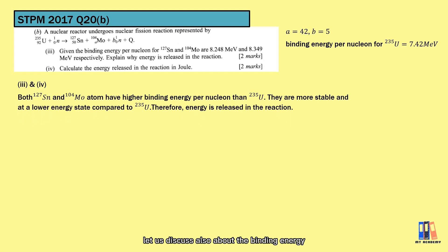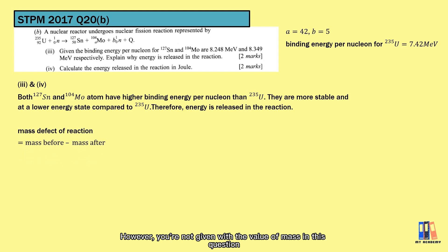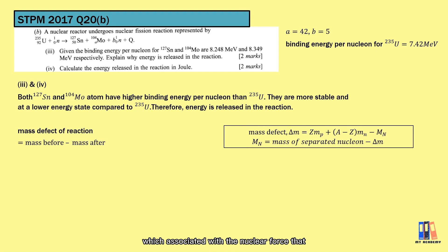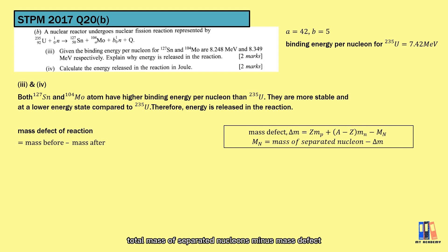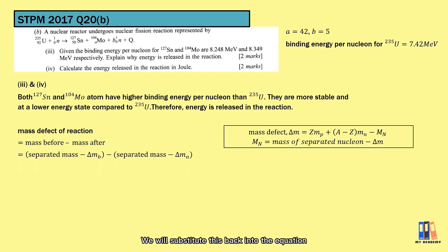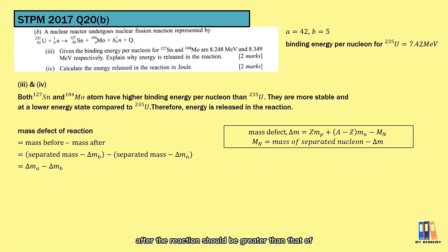Before calculating the energy release, let's also discuss binding energy as a method. Since mass values are not given in this question, we use binding energy instead. We review the formula for mass defect — total mass of separated nucleons minus mass of nucleus — and rearrange so that mass of nucleus equals total mass of separated nucleons minus mass defect. Substituting back, since nucleon number is conserved, the total mass of separated nucleons cancels, and we find that the total mass defect after the reaction must be greater than before, which is associated with the binding energy.